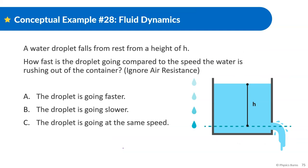So a water droplet falls from rest from a height h. How fast is the droplet going compared to the speed of the water rushing out of the container? We kind of just talked about this, this is exactly what Torricelli's Law is. The droplet is going at the same speed. If it's dropping from the same height as the surface of the water, then this speed and this speed are going to be the same. Directions are different, speeds are the same.